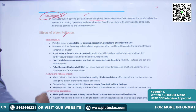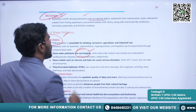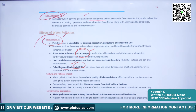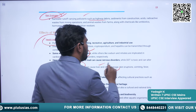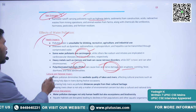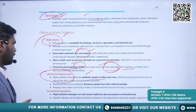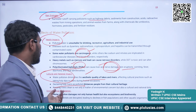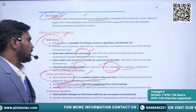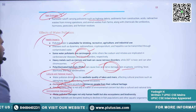Effects of water pollution: the major impact is on health, as polluted water causes many health problems. Some water pollutants are carcinogenic, causing cancer. Pollutants like polychlorinated biphenyls can cause liver and nerve damage and skin eruptions. Water pollution also diminishes the aesthetic quality of lakes and rivers, and polluting holy rivers such as the Ganga and Yamuna damages cultural heritage.